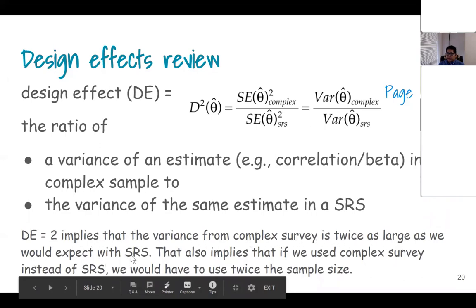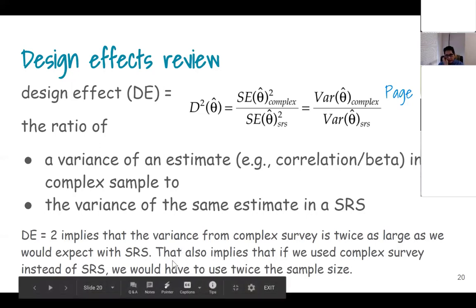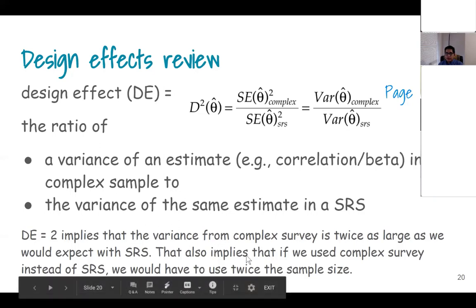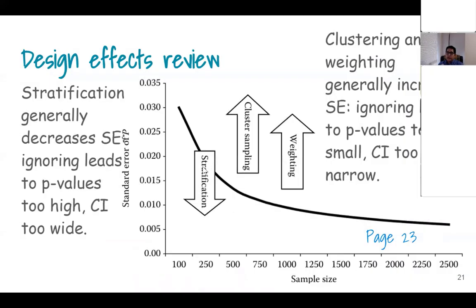If the design effect is 2, that implies the variance from the complex survey is twice as large as what we would expect from SRS. That means if we used the complex survey instead of SRS, we would need twice the sample size. This is an important consideration for how the design effect affects our variance.